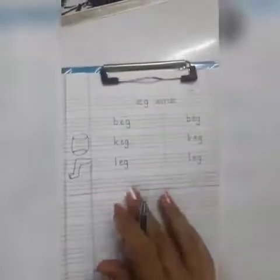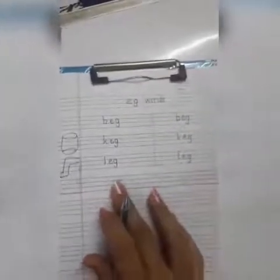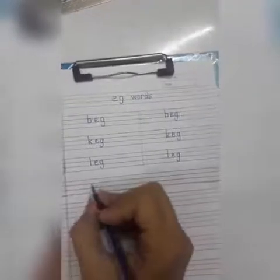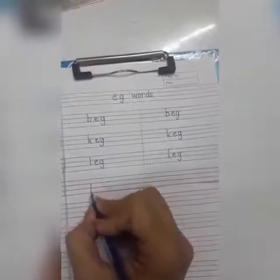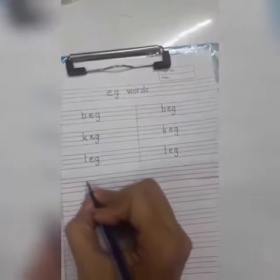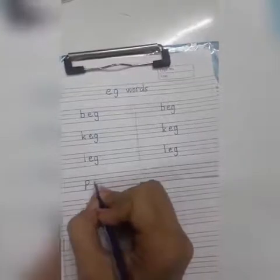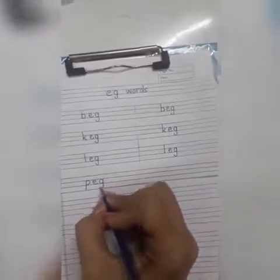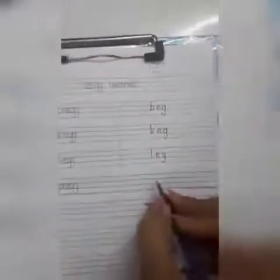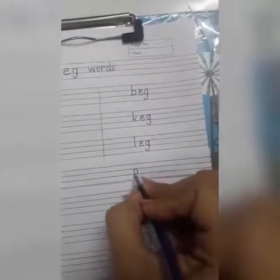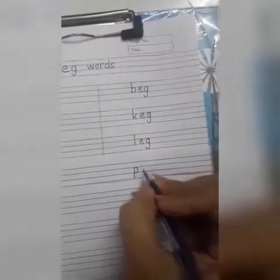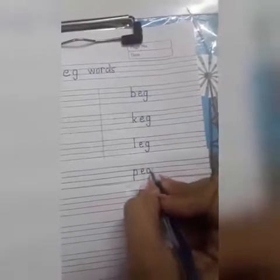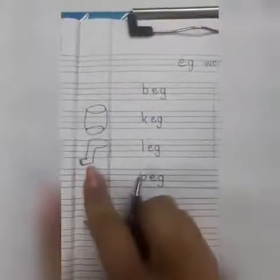Now the last word is peg. P, from this blue line you have to go till this pink line to make small p. P-Egg-Peg. Again write here peg. P-Egg-Peg. Now draw the picture of peg here.